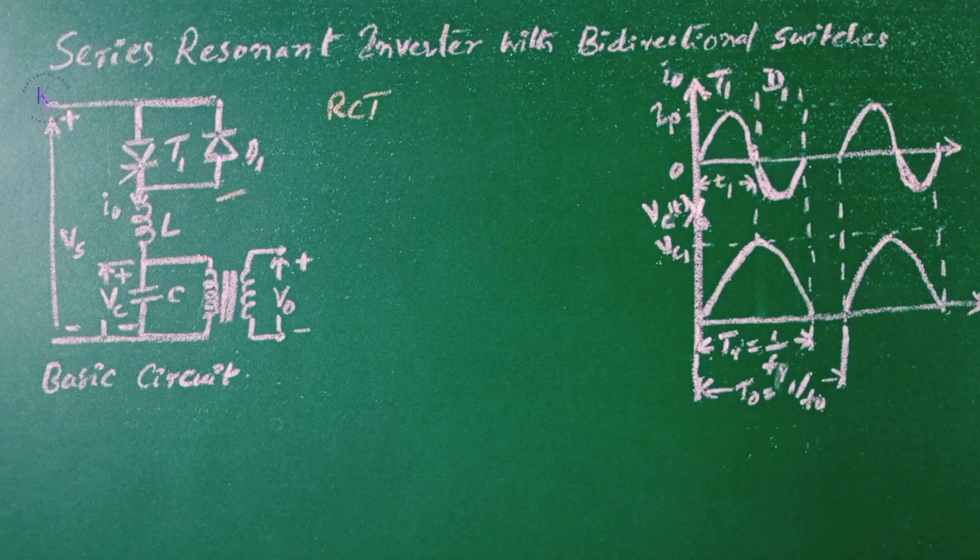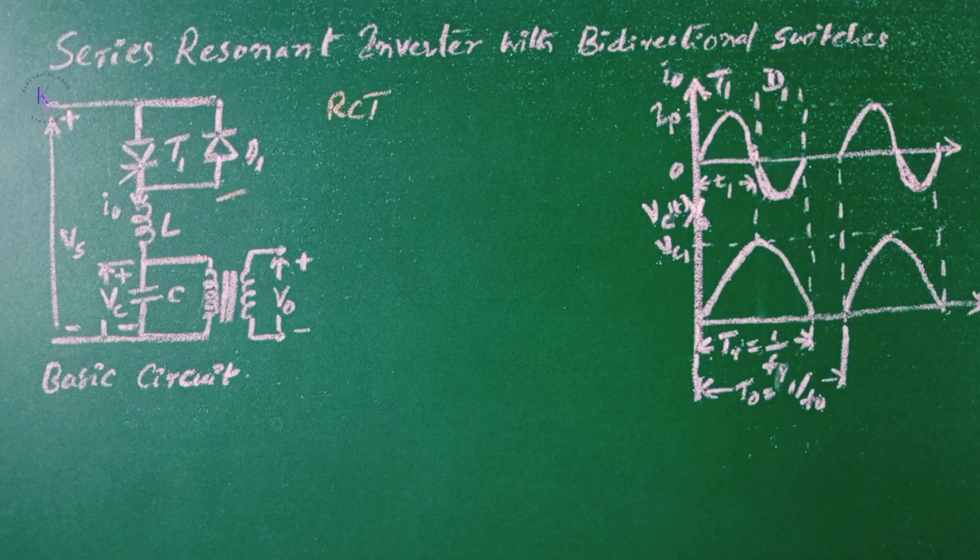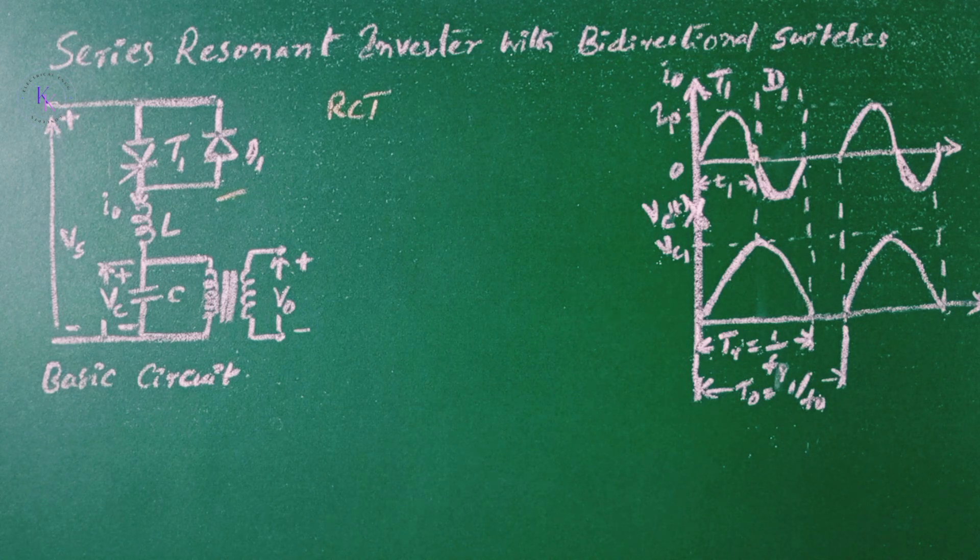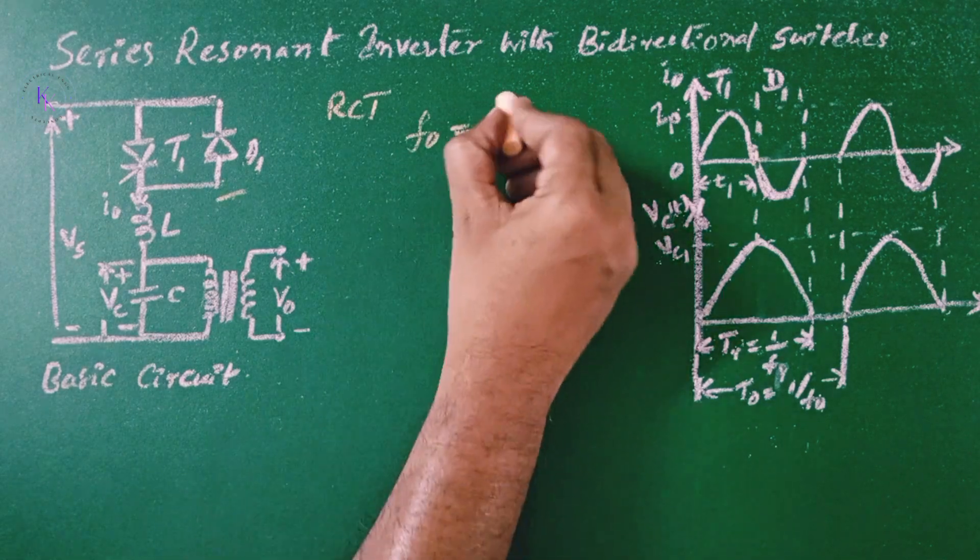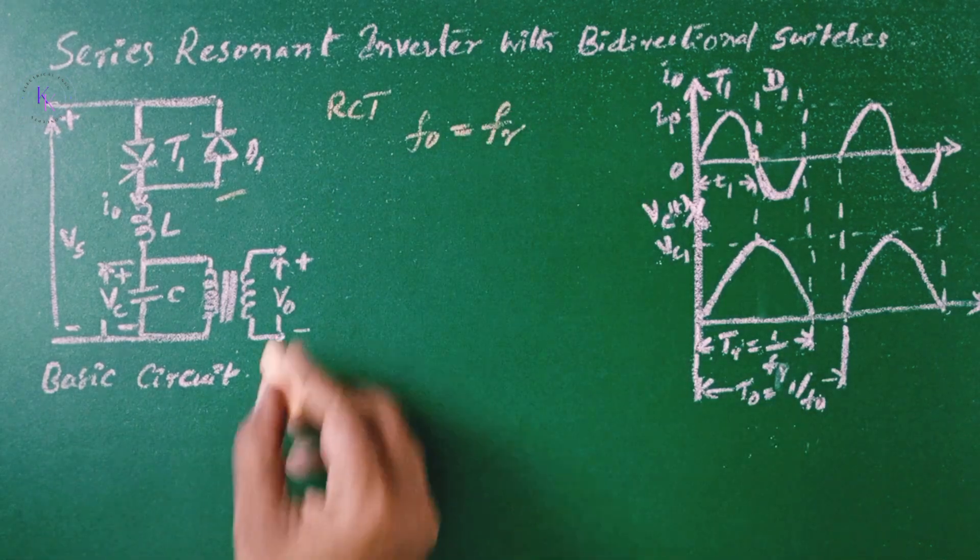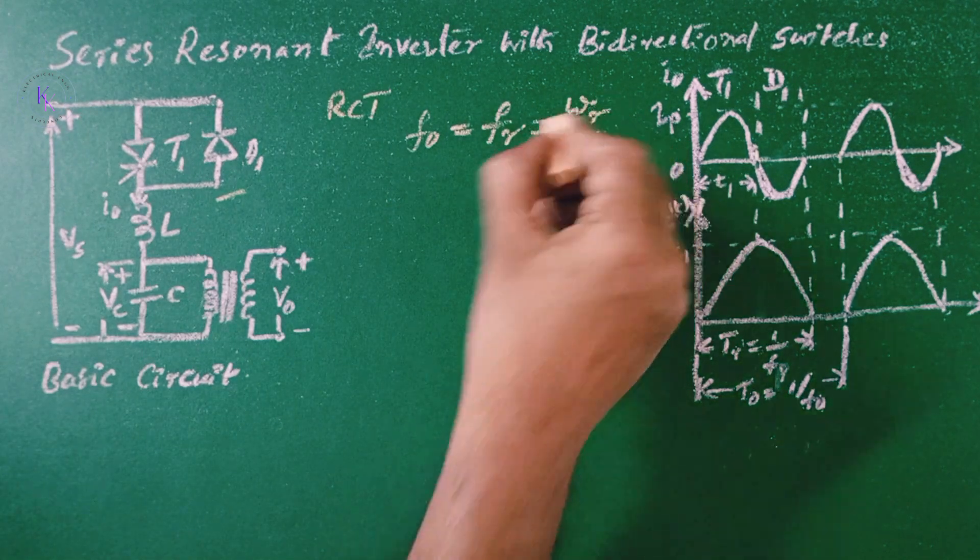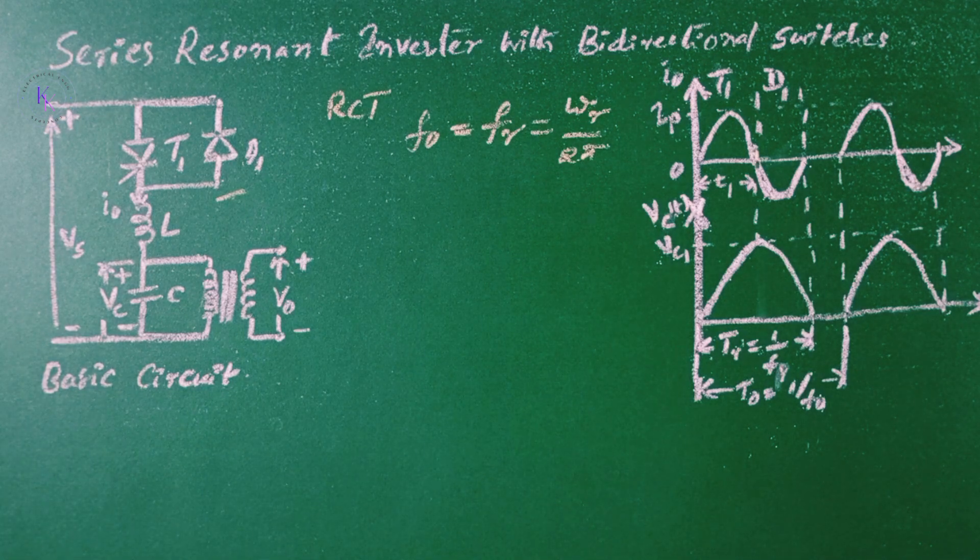If the conduction time of the diode is greater than turn-off time of the thyristor, there is no need of a dead zone and the output frequency F0 should be equals to the resonant frequency FR, where FR equals to omega R divided by 2 pi, where FR is the resonant frequency of the series circuit.